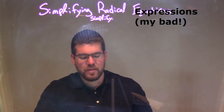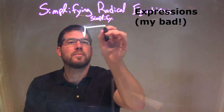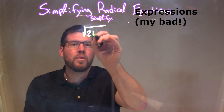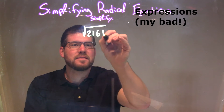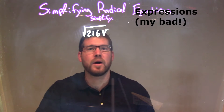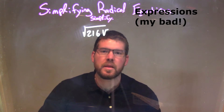So if I was given this to simplify: square root of 216v, where V is inside the square root as well. So it's 216 times V.